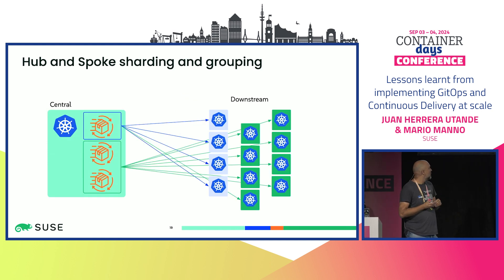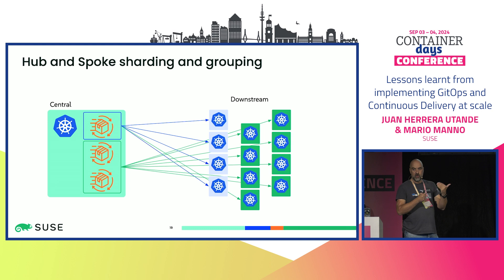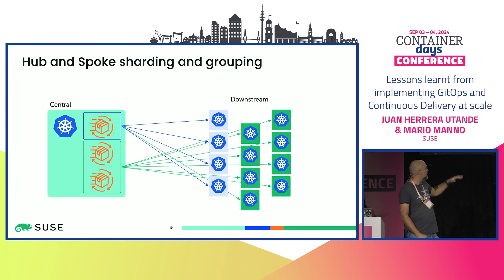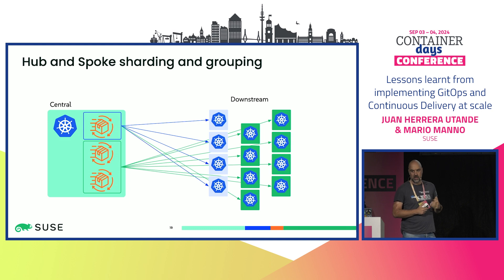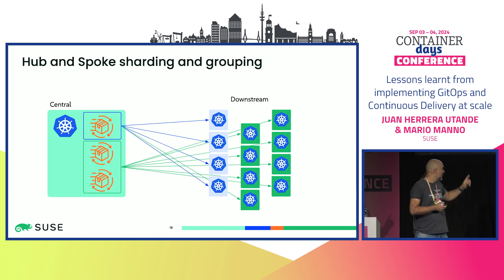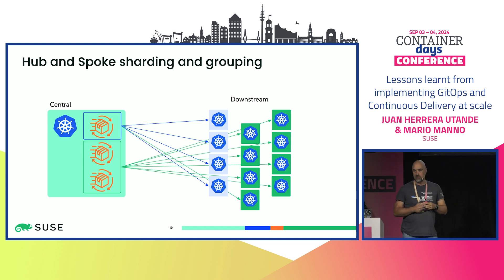Another model that works well in Flux is combining horizontal scaling with the concept of grouping target systems and sharding. You specialize controllers for specific sets of downstream clusters. This is also a good approach, and as we'll see, part of our recommendation to customers was to replicate something similar to this model.